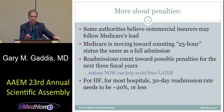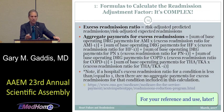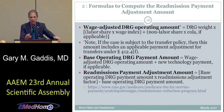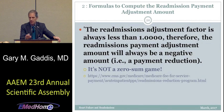For most hospitals, the heart failure readmission rate needs to drop under 20%. The methodology for calculating penalties is complex with numerous steps. But at the end of the day, the readjustment factor is always something less than one. So it's not a zero-sum game where some hospitals gain and some lose — it's actually whether your hospital loses nothing, something, or a lot.